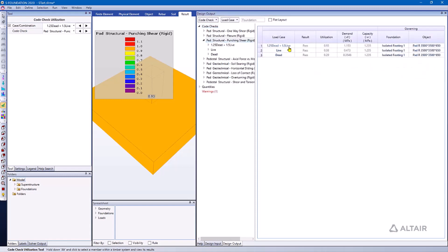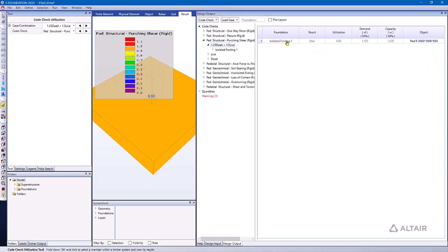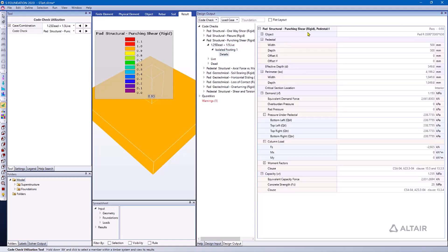And I can drill down into the details and look at the isolated footing, and specifically the punching shear around the pedestal. If I had piles or multiple pedestals, I would be able to see that around each pile or each pedestal.